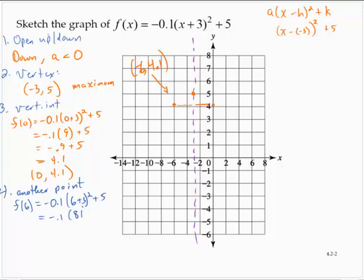9 squared is 81 plus 5. So that's -8.1 + 5. And that's -3.1. So I have (6, -3.1).